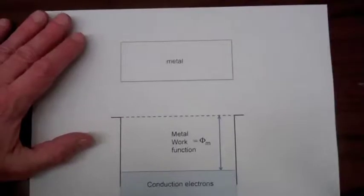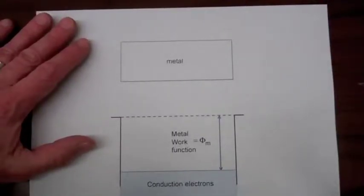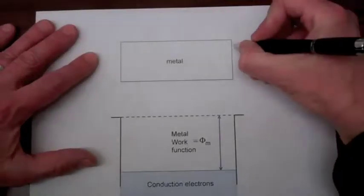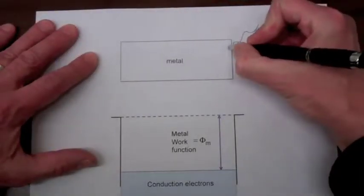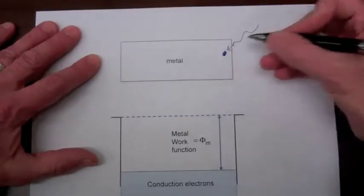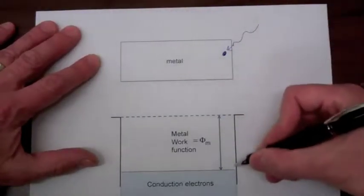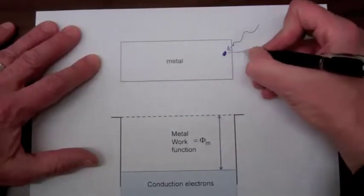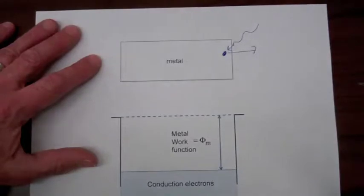One way for an electron to gain enough energy to be emitted from a metal is by shining light on the metal. The light will be absorbed by the electron, and if the amount of energy gained is enough to overcome this potential barrier, the metal work function, then the electron can be ejected from the metal.